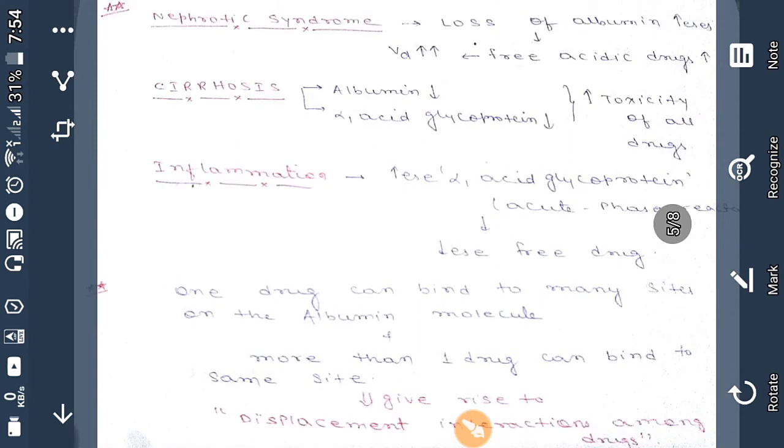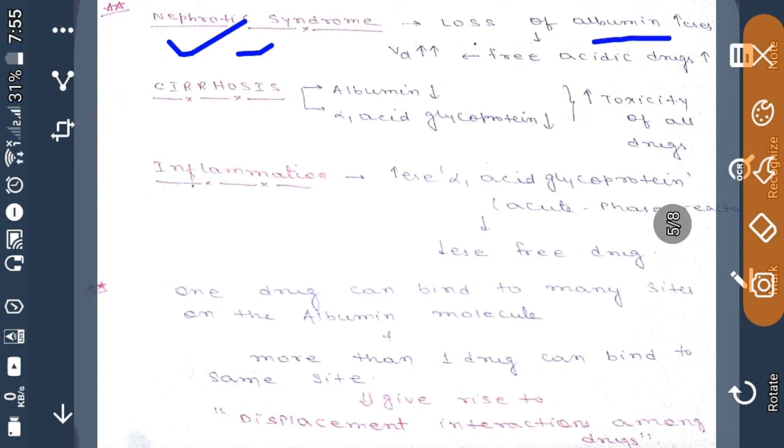Now some clinical cases of plasma protein. If there is nephrotic syndrome, it means loss of albumin will increase. If there is increase in loss of albumin, then free acidic drugs will increase because acidic drugs bind with albumin. The drug which is binding with any protein is not free, so that will not cross your plasma membrane or your glomerular capillaries.